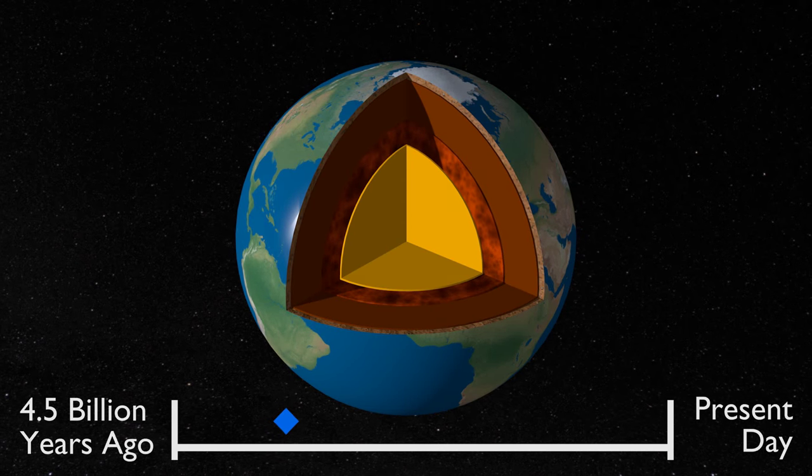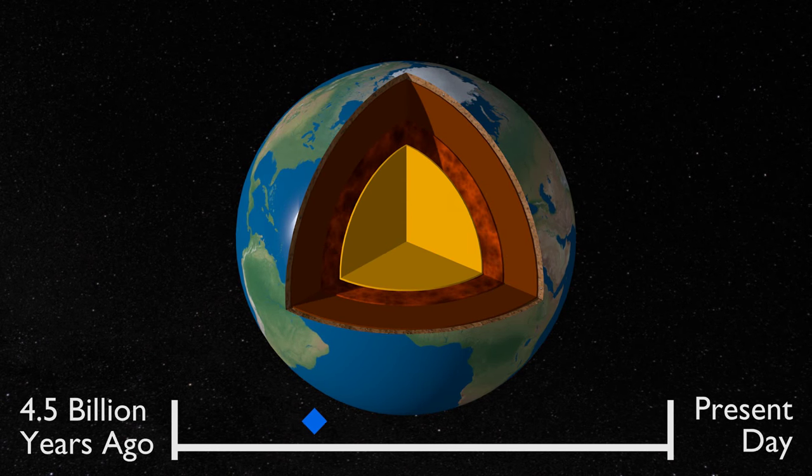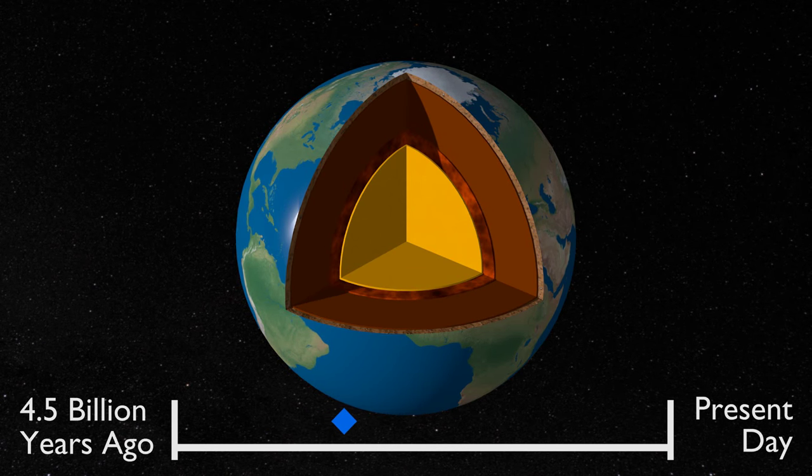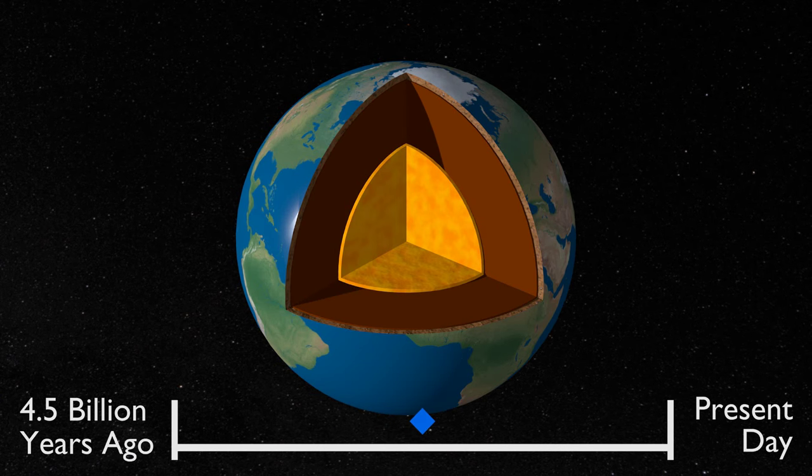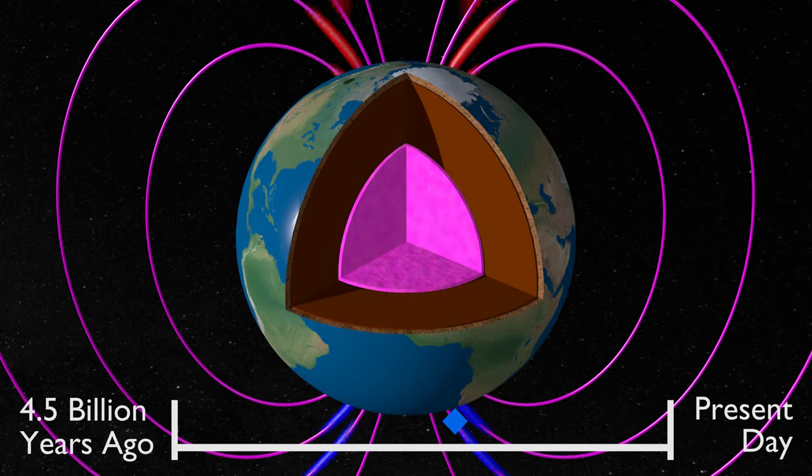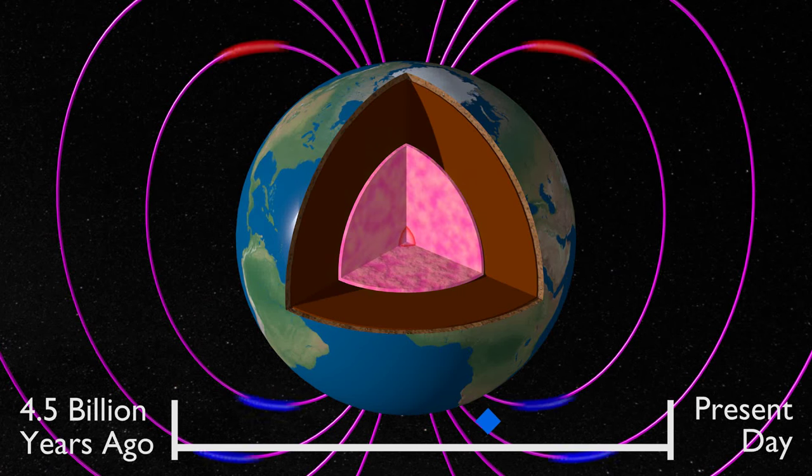Then, 2 billion years after the Earth was formed, the liquid mantle started to solidify, while the core began to release its trapped heat. The movement of heat from the core triggered a convective fluid motion strong enough to generate a magnetic field.